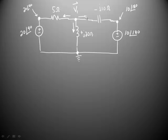At node V1, coming out of the node through the 5 ohm resistor, we have V1 Phasor minus the voltage on the other side of the 5 ohm resistor, which is 20 at angle 90 degrees, divided by the resistance in between, 5 ohms.